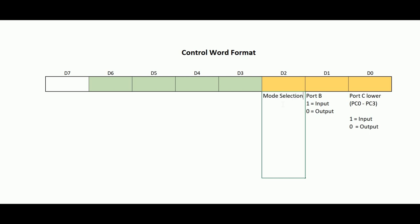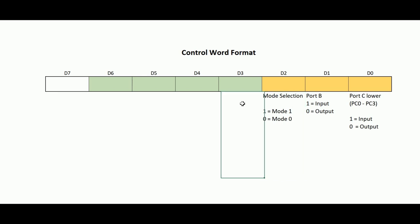Bit D2 is used for mode selection for Control Group B (Port B and Port C lower). In IC8255, there are three I/O modes: Mode 0, Mode 1, and Mode 2. However, Control Group B can only work in Mode 0 and Mode 1 — there is no Mode 2 for Control Group B. If D2 is 1, it works as Mode 1; if D2 is 0, it works as Mode 0.